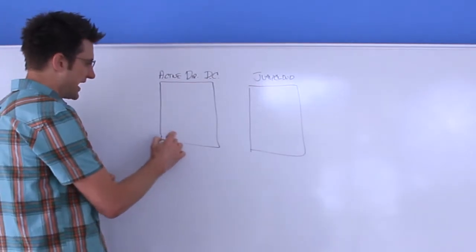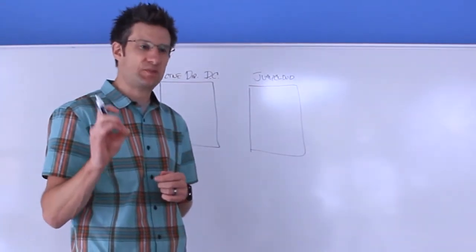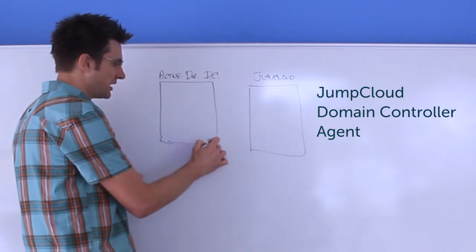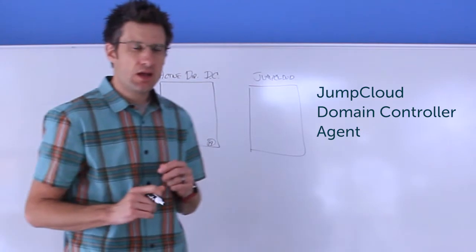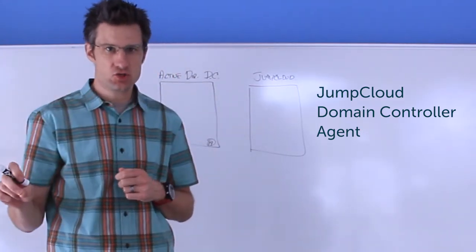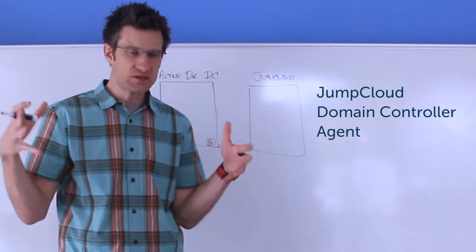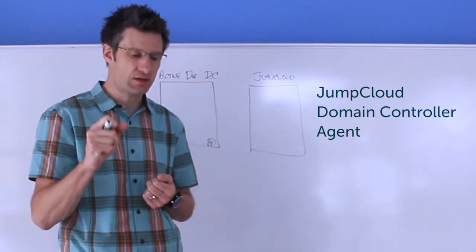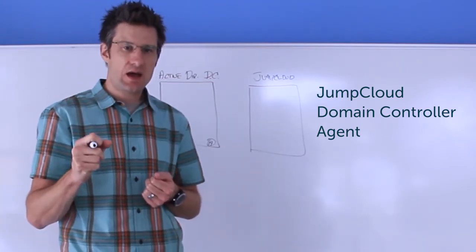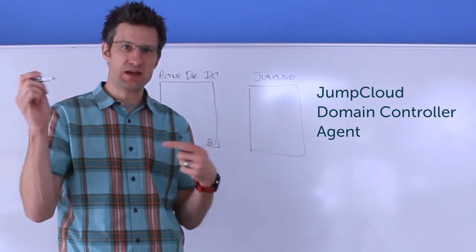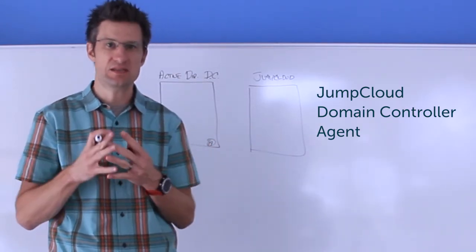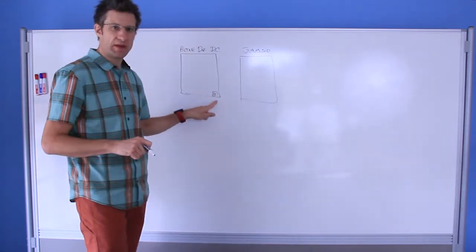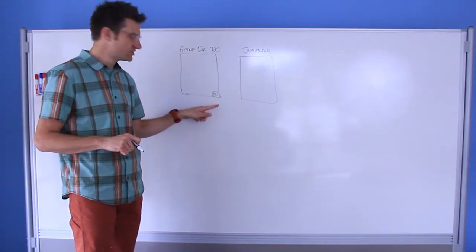So the first thing that an admin will be doing is installing a special domain controller agent that we have created. These agents are installed on every domain controller. So for example, if you have a fairly elaborate forest of domain controllers that are all interconnected, each of those domain controllers must have the AD Bridge Agent installed on it. This is to ensure that password propagations, no matter where the authentication or password request change is coming in from, does get properly caught and then securely transmitted out to JumpCloud. So your domain controller has been installed with the AD Bridge Agent.